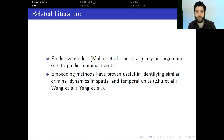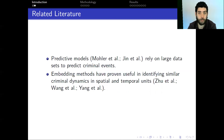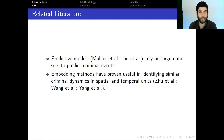In the related literature, we found firstly crime prediction model literature, such as the one proposed by Molly et al. based on self-exciting point processes, or the work proposed by Gene et al. based on deep learning methodologies. However, these models rely heavily on large datasets, and training them specifically for homicide prediction is challenging. We also found that embedding methods have proven useful in identifying similar criminal dynamics in spatial and temporal units, as in the works by Chu et al., Wang et al., and Yan et al.